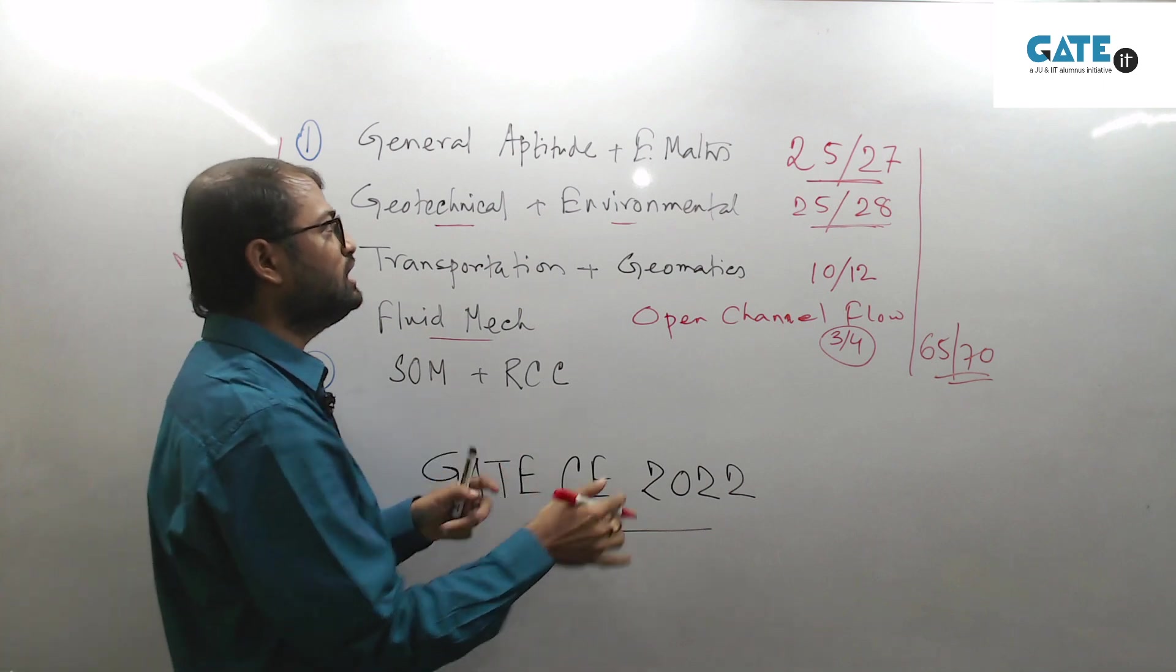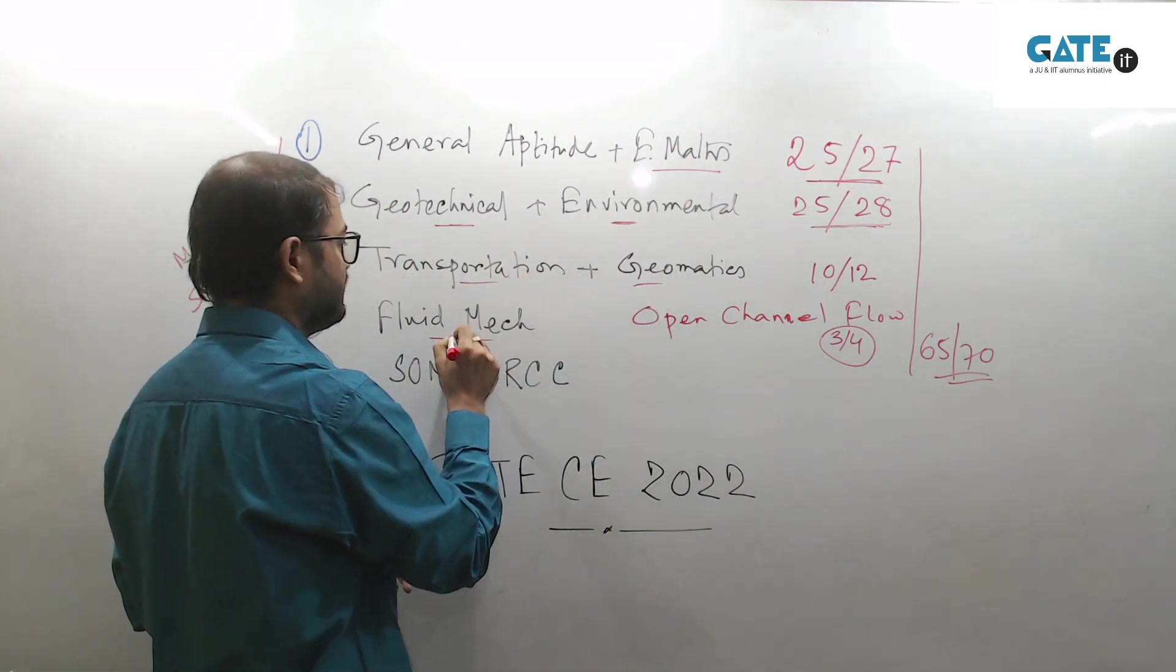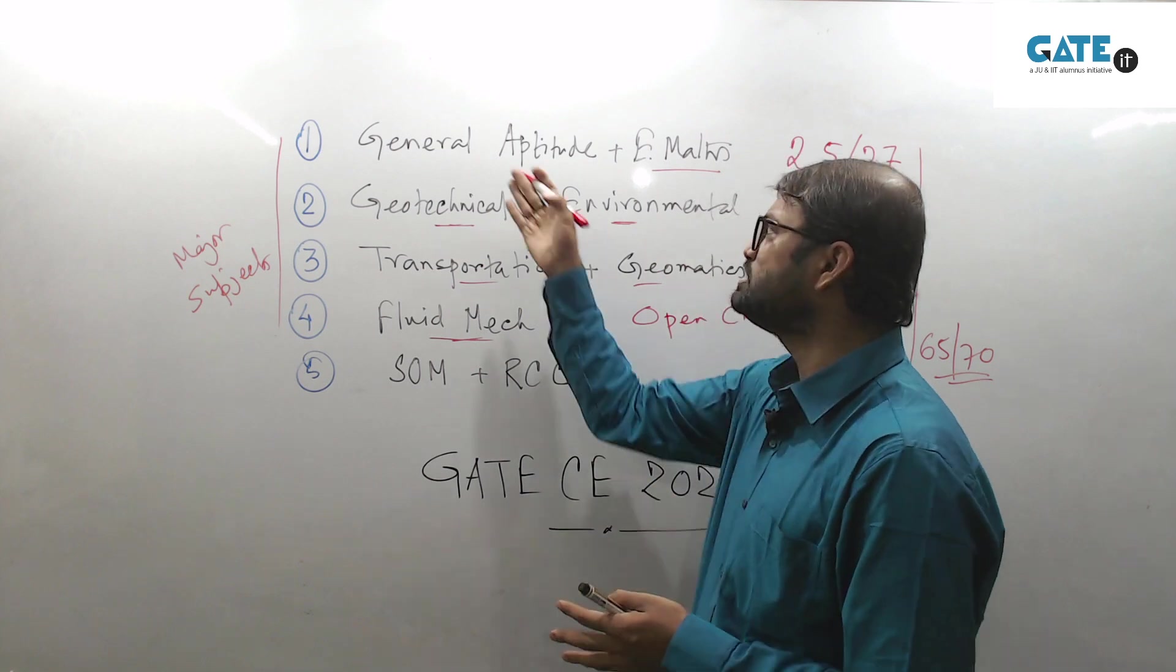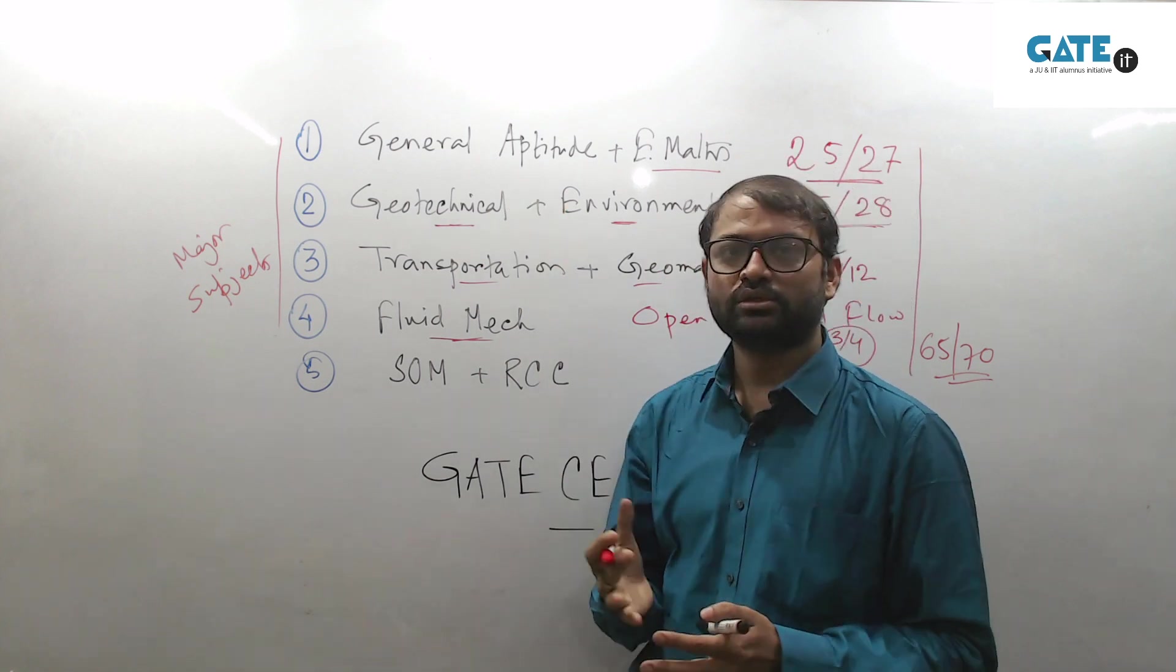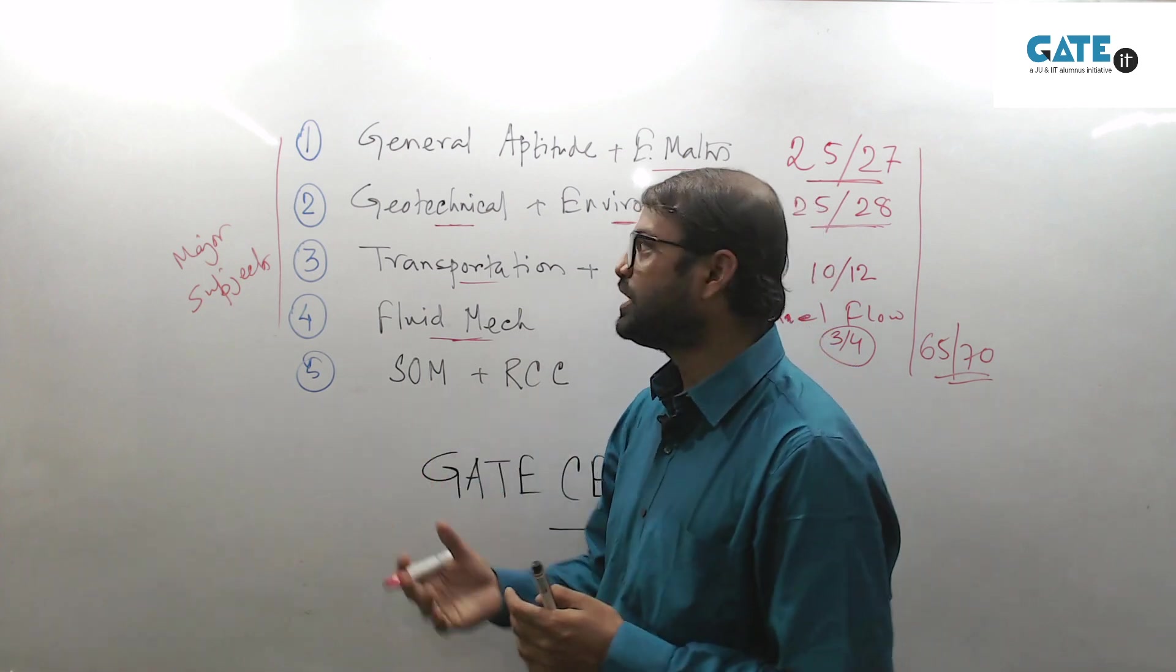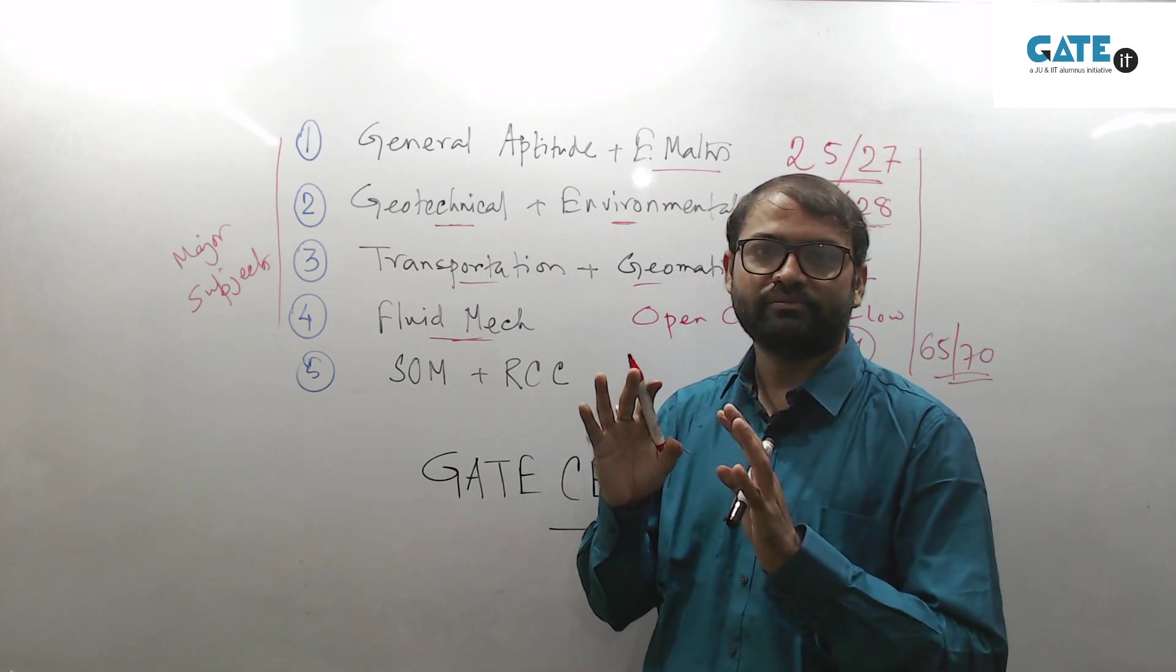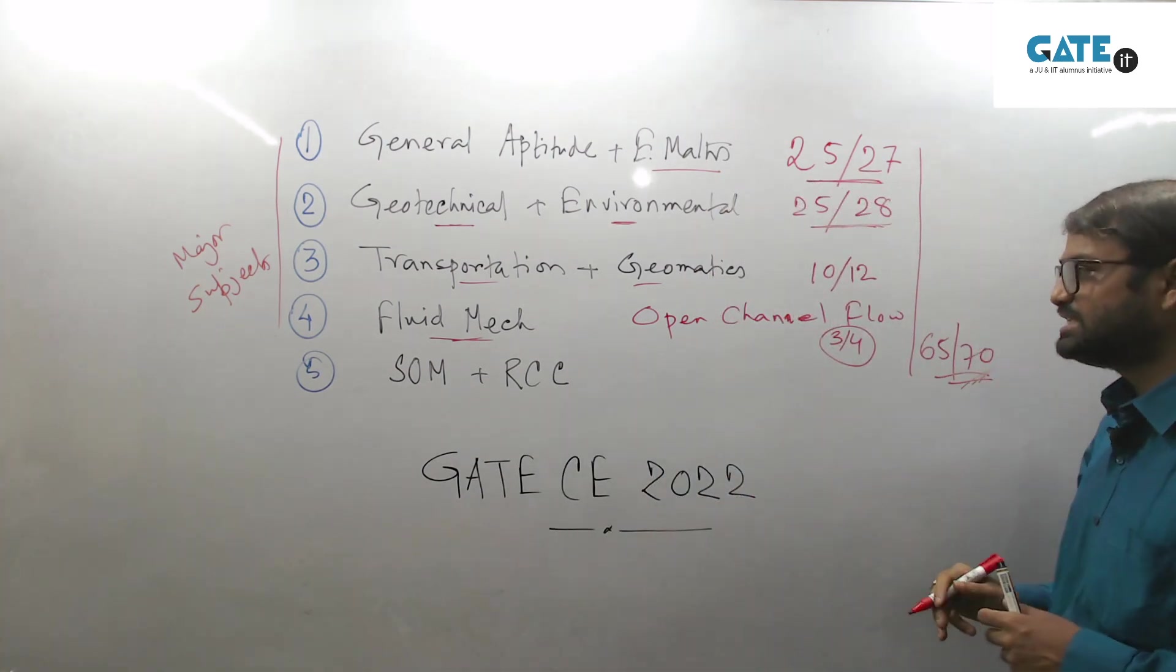So you have to study only one subject, two, three, four, five, and part of a subject. So just 5.5 subjects you have to study, because general aptitude people generally don't study - it is aptitude. Whatever knowledge you have or whatever aptitude you have, you can perform in the examination hall, that's not an issue. So just by studying 5 to 6 subjects, you are standing here at 65 to 70.